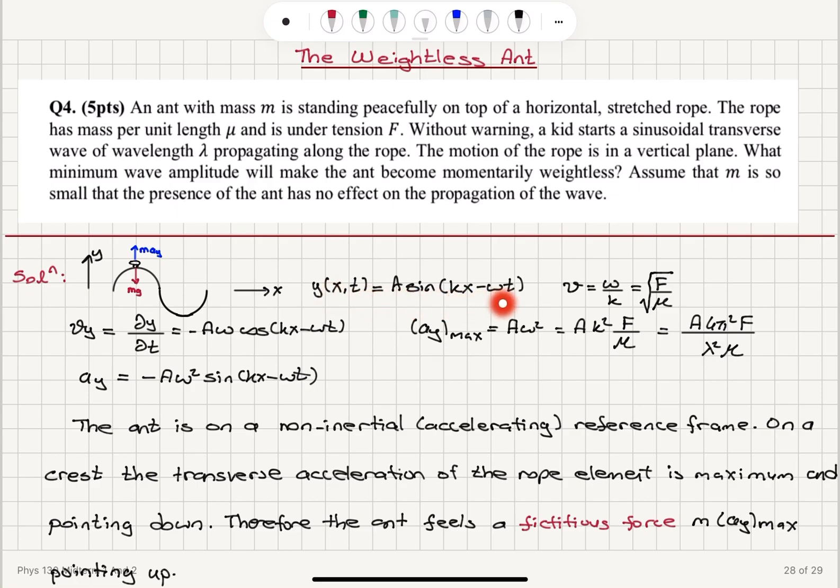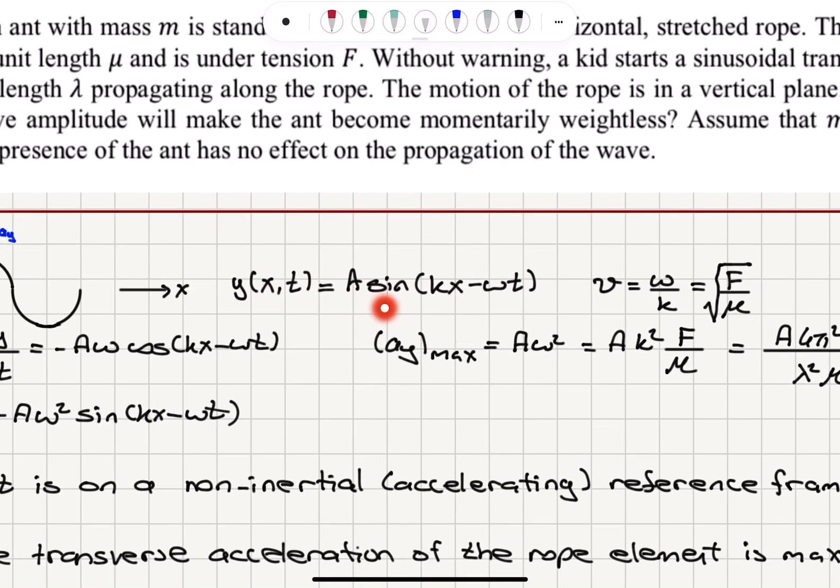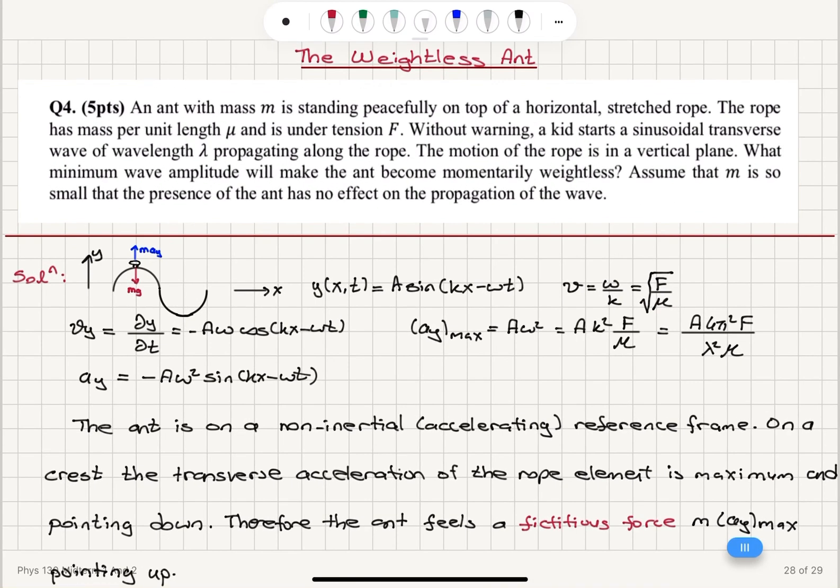So if this is a traveling wave, it has y(x,t) = A sin(kx - ωt) as its wave function where the propagation speed is ω over k, which is square root tension F divided by mass per unit length. The transverse velocity vy is ∂y/∂t equals minus A ω cosine(kx - ωt). Transverse acceleration is minus A ω² sine(kx - ωt).